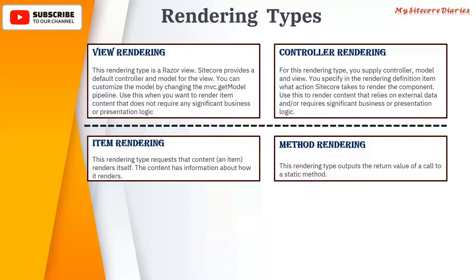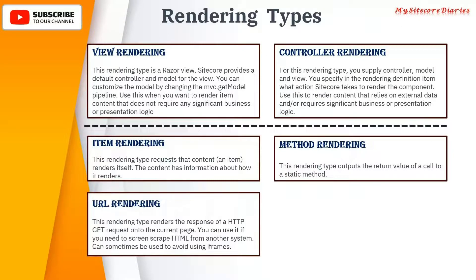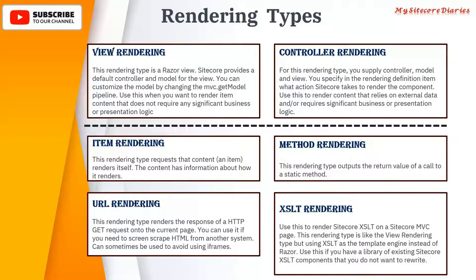URL rendering can be used to replace an iframe. It responds to an HTTP GET request on the current page, so you can use it if you need to screen-scrape HTML from another system — similar to how an iframe pulls content from another source.